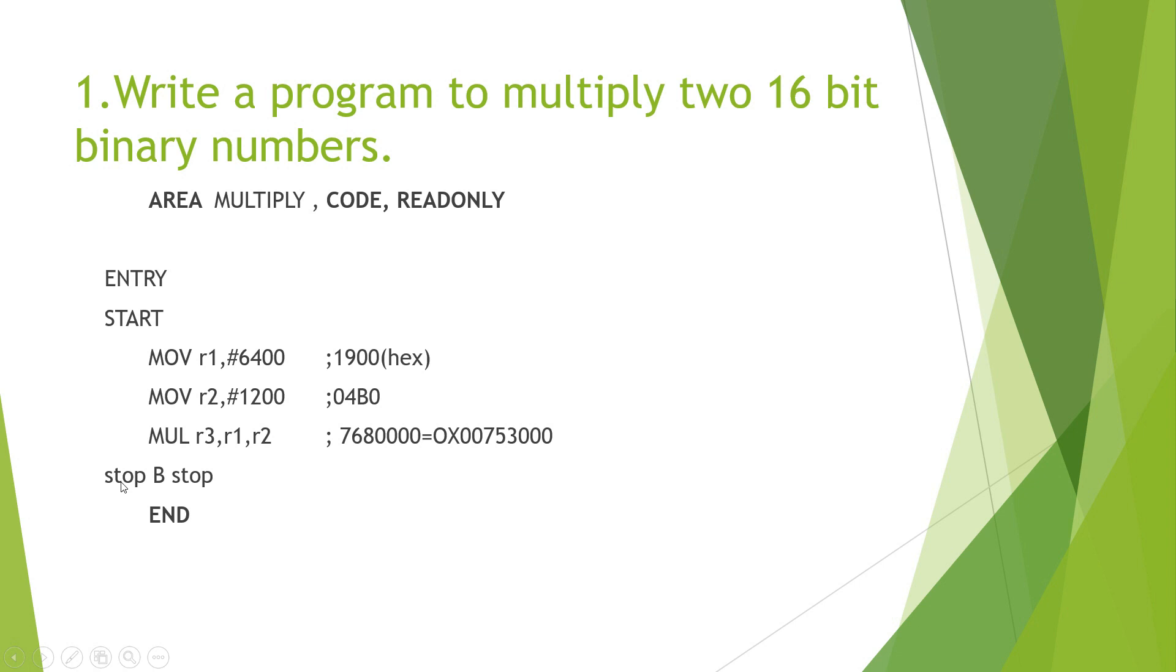We have an instruction called as B which means branch to a line labeled with the word stop. That means here is the label stop. So, it has to branch back to the same line. That is, it goes in an infinite loop. This way is a convenient way for ending the program.